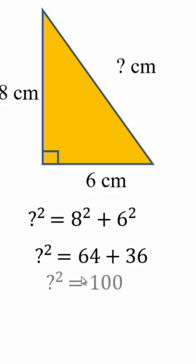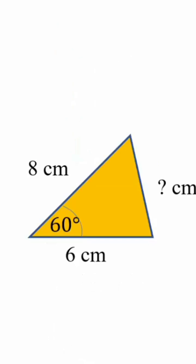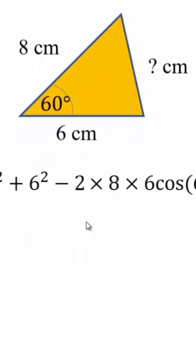64 plus 36, which is equal to 100, and the square root of 100 is 10 centimeters. What if the angle between the two sides here is not 90 but something like 60? Then this time we subtract two